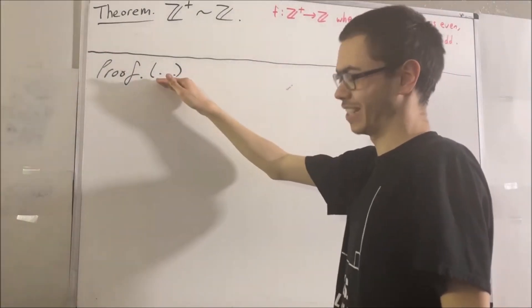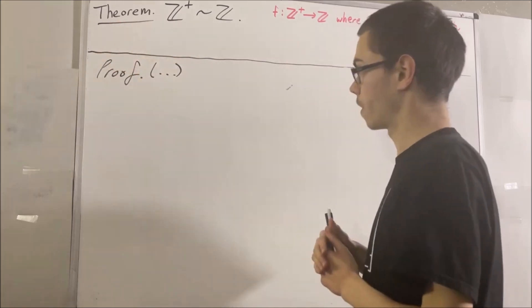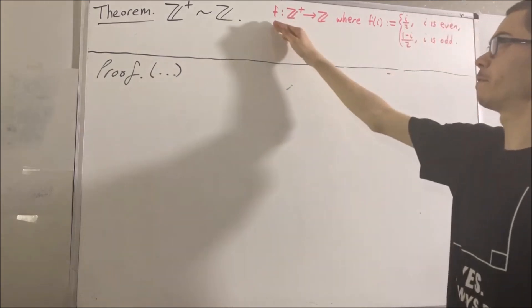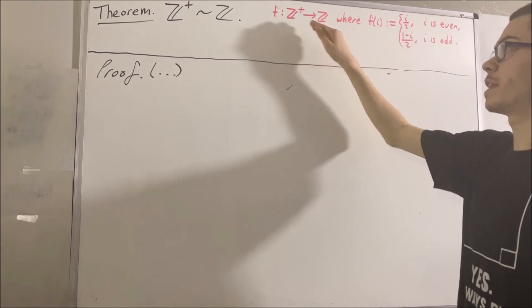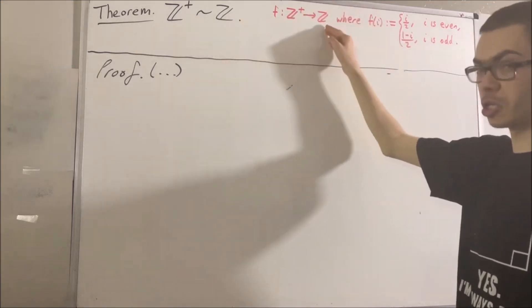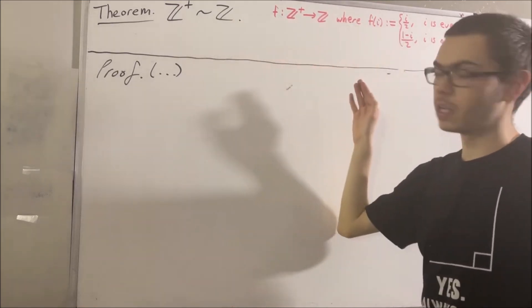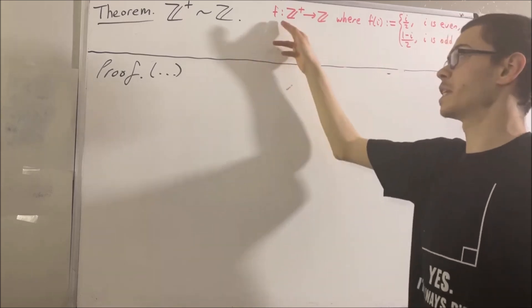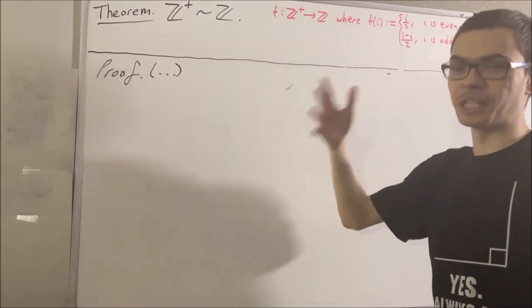Now that we know f is a function from the positive integers to the integers, we want to prove that f is a one-to-one correspondence between the positive integers and the integers — in other words, that f is a bijection. To do that, we can prove that f is injective and surjective. Let's start by proving that f is injective.